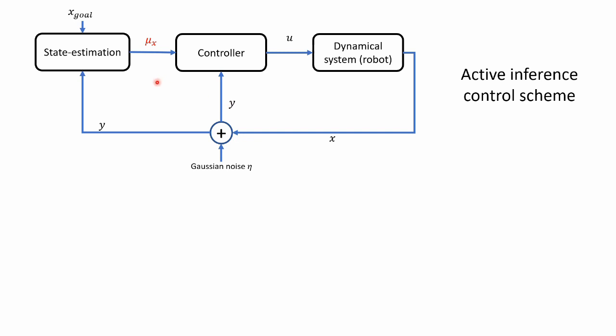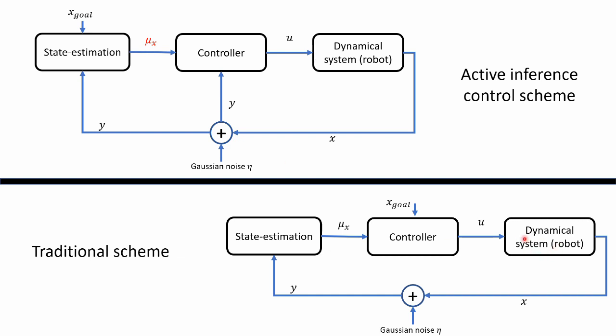A traditional control and filtering scheme would look more like this. We have a dynamical system. We output a state. That state will be observed using some model and some noise. We would get a measurement y. Our filter or our state estimation module would typically take in a measurement and would output a belief that is close to x, that is not biased in any way.